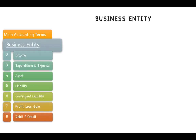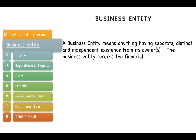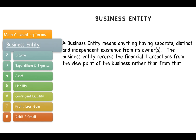The first one is business entity. A business entity means anything having separate, distinct, and independent existence from its owners. The business entity records the financial transactions from the viewpoint of the business rather than from that of the owner — meaning the business and the owner are two different legal entities.